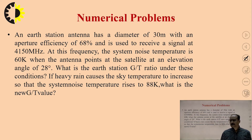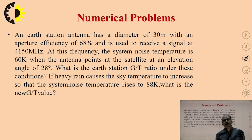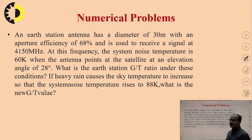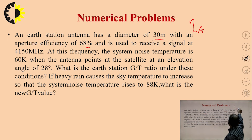Most numerical problems in university examinations are on the G/T ratio or the EIRP and the loss equation from the satellite link equation. Now we will take some specific numerical problems which use all these equations. Our first numerical: an earth station has an antenna diameter of 30 meters with an aperture efficiency ηA of 68%. It is used to receive a signal at 4150 MHz.